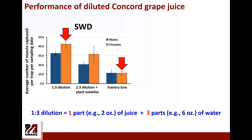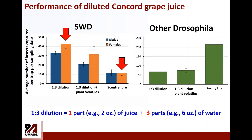The graph shows the average number of male and female spotted wing drosophila by treatment. The 1-to-3 dilution of juice was about three times more effective and more attractive to females — and also to males — than the Sentry Lure. Not only that, the 1-to-3 dilution attracted about three to four times fewer non-target insects. So a higher proportion of flies captured were spotted wing drosophila, and in particular females.